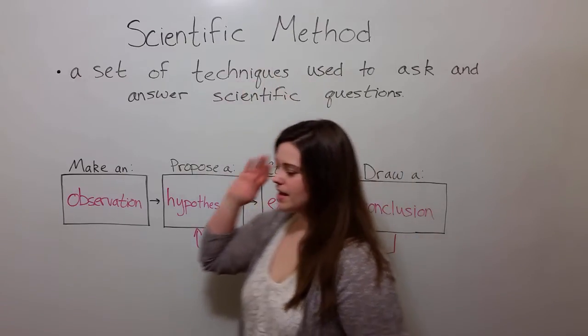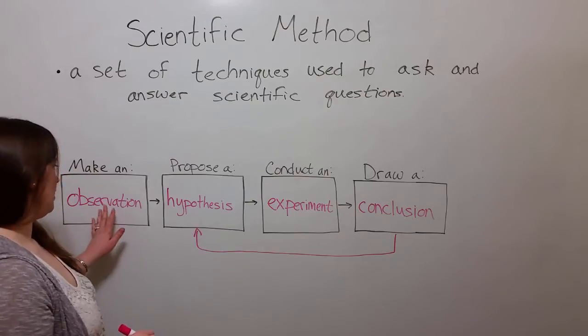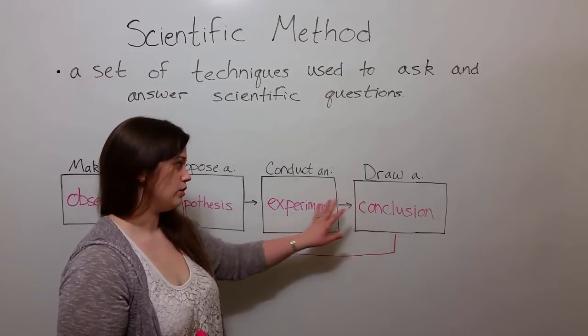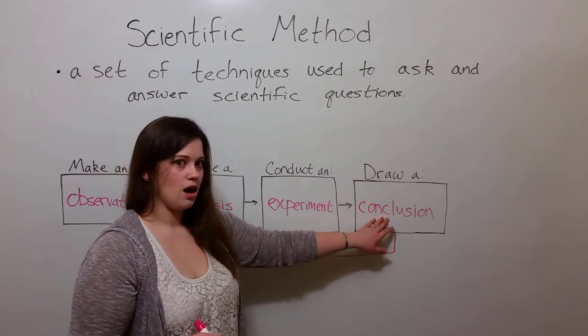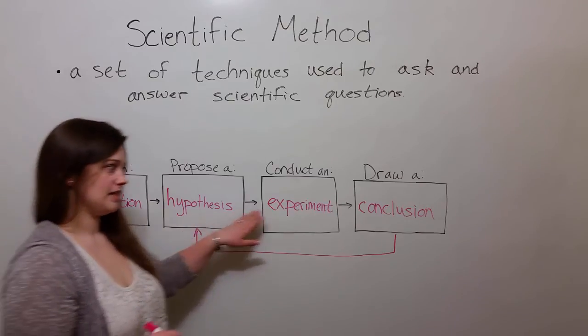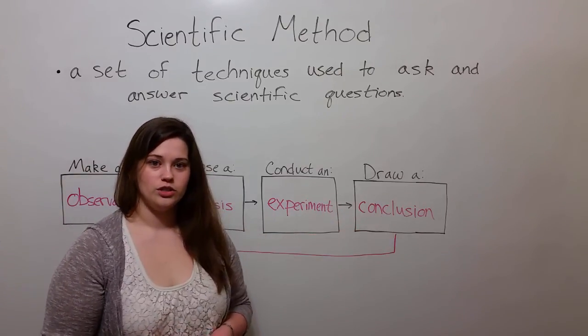So, you see that the scientific method is a cyclical process. You start at one end, you go through the different steps, and depending on the results of the experiment and the conclusion that you draw, you may have to go back and formulate another hypothesis, and go through the process again until you answer your original question.